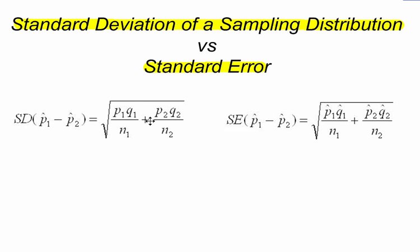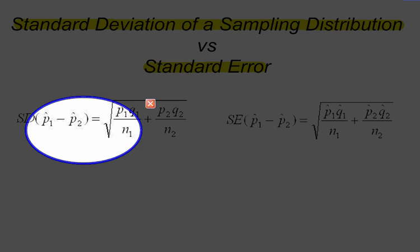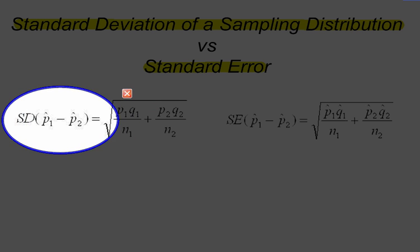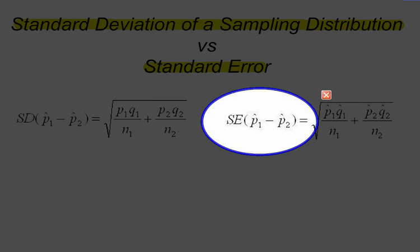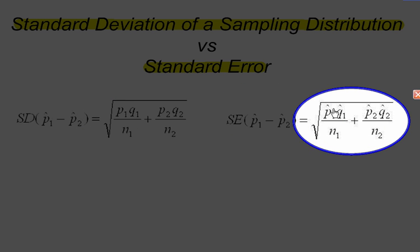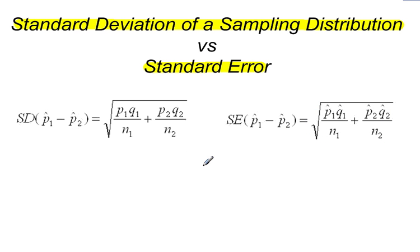You can tell that the two formulas are very similar. In fact, the only difference between the two formulas is the fact that for standard deviation of a sampling distribution, we are using P and Q instead of standard error, we use P hat and Q hat. Besides that, everything is pretty much exactly the same.